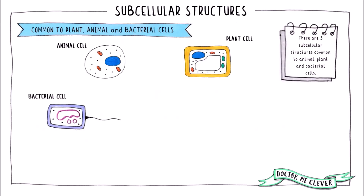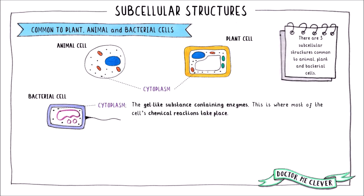There are three subcellular structures that are common to animal, plant, and bacterial cells. The first is the cytoplasm — the gel-like substance that fills a cell. It contains lots of different enzymes and is where most of the cell's chemical reactions take place.